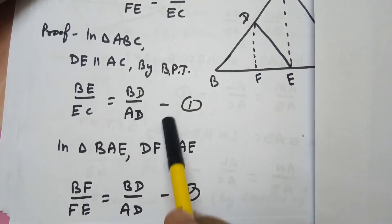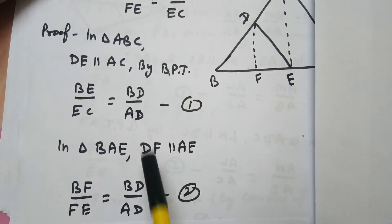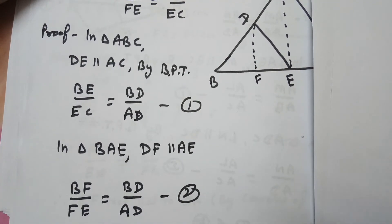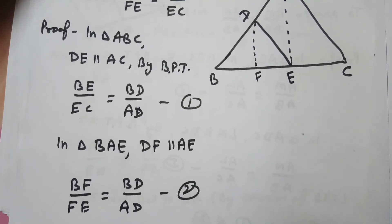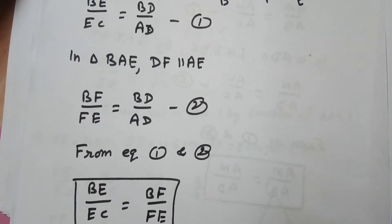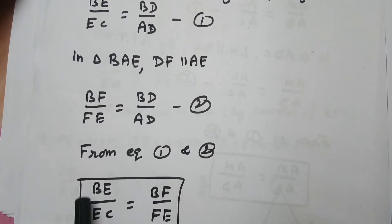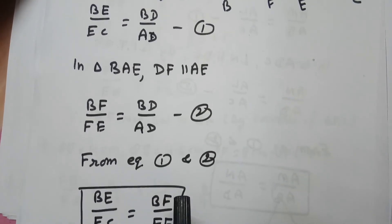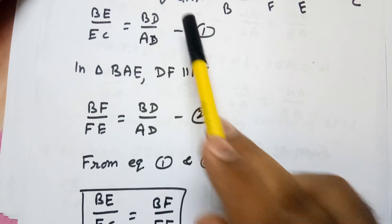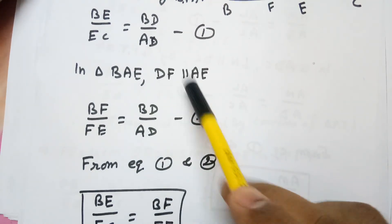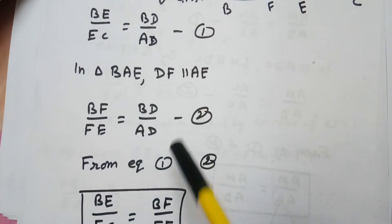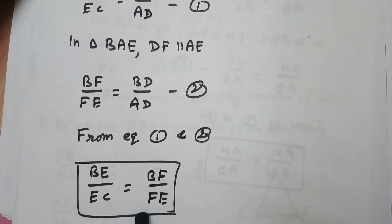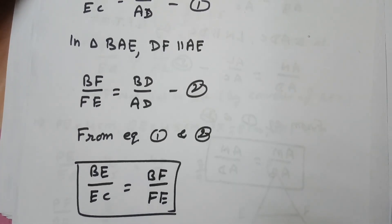Comparing equations one and two, the right-hand sides are both BD over AD, so the left-hand sides must also be equal. Therefore, BE over EC equals BF over FE. This is the required result, proved simply by applying the BPT theorem in both triangles and comparing the ratios.